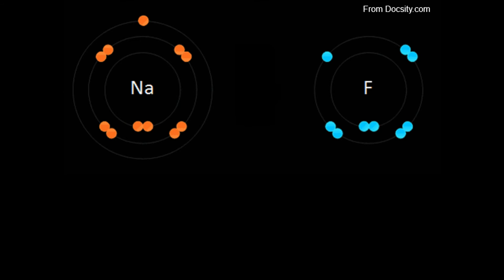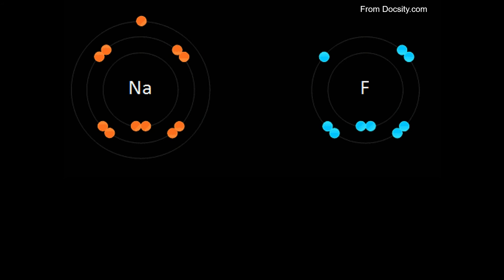In ionic bonding, one atom loses a valence electron, while the other gains an electron for stability. Sodium gives up 1 electron to become stable, since in its second energy level, the second ring from the center, it has 8 electrons.